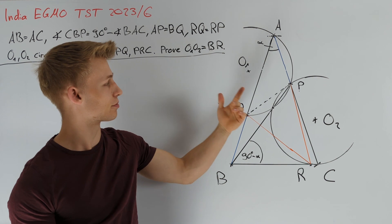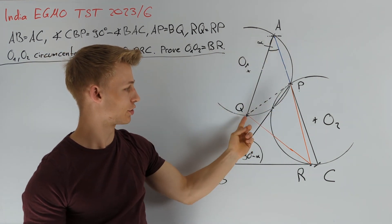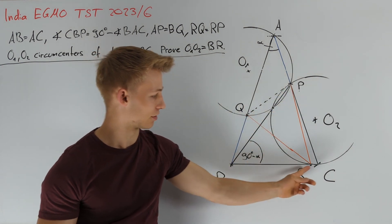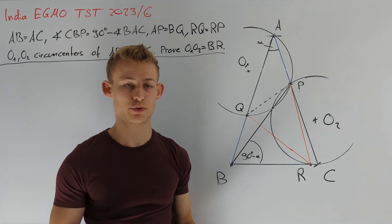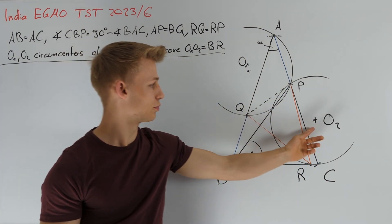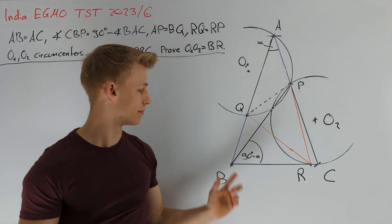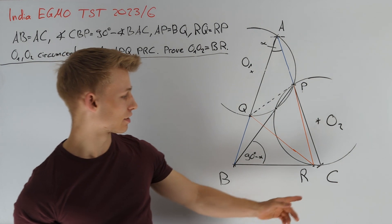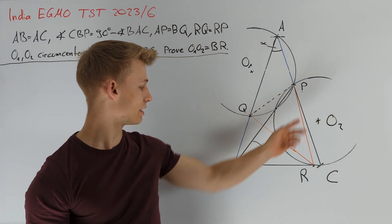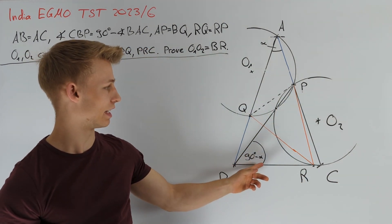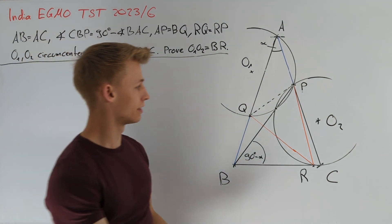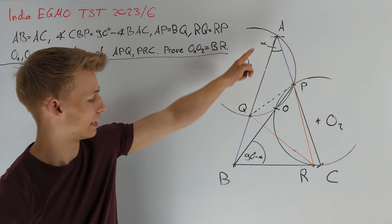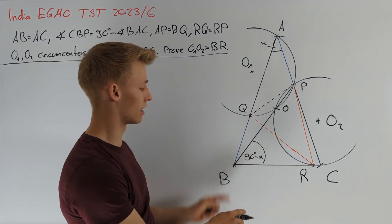If O1 is the circumcenter of triangle APQ and O2 is the circumcenter of triangle PRC, our task is to prove that O1O2 has the same length as QR. The first thing to note is that from the angle condition — CBP equals 90 degrees minus alpha — we directly get that the circumcenter O of triangle ABC must lie on line BP.